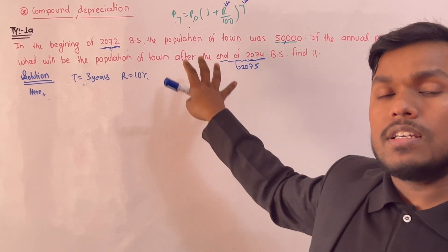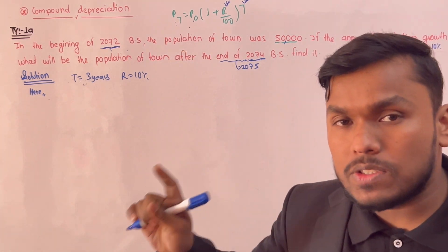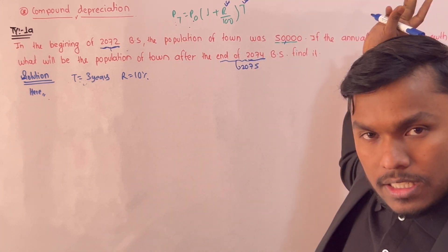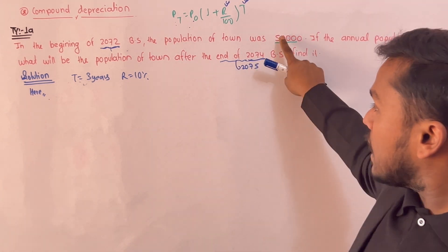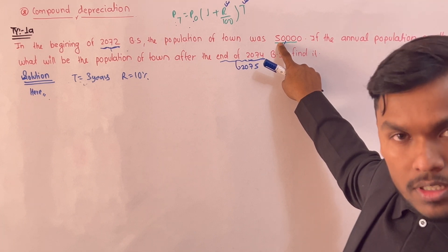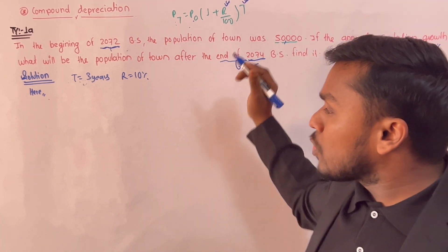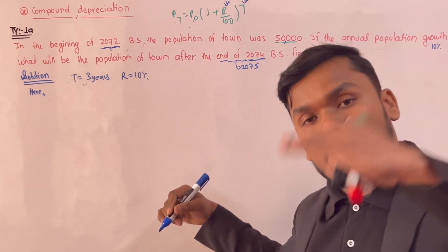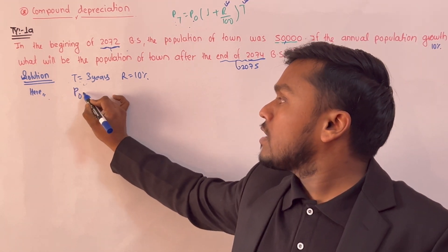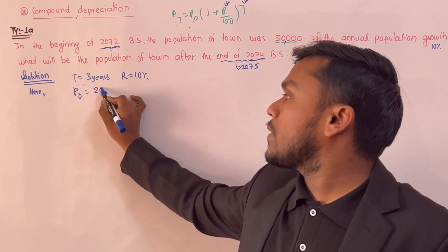This is the population of 2075. So the population will be 80,000 or 20,000 — the population will be 80,000. The P0 is the 20,000 part.